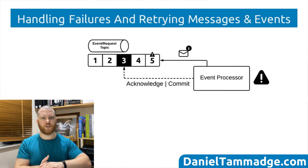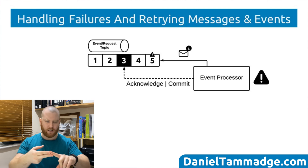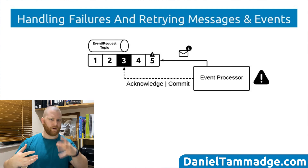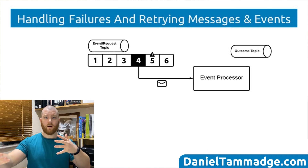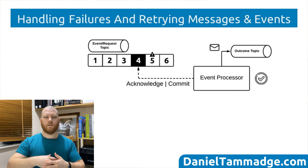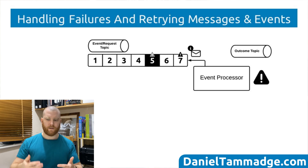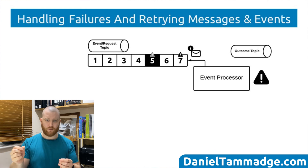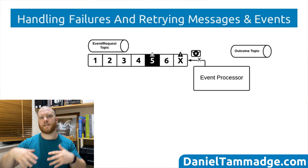You could publish the message again to the topic with some additional header information, like the retry count and last time it was processed, and then put that as the next message. In this example, we already had message four come in, so now the retry message becomes message five. After publishing message five, it would acknowledge and then process message four, and then come to message five. But again, it may encounter an issue, so you may do the same thing — publishing it again with additional retry metadata — and having logic which says: after three retries, push it somewhere else, log it to the database, and move on.